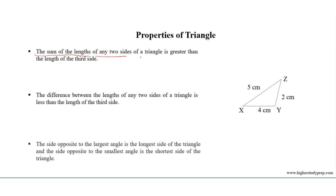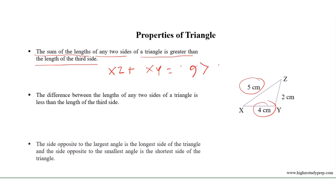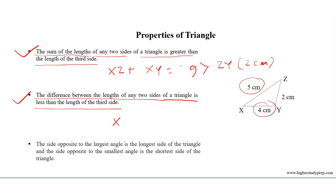Properties of a triangle: the sum of the lengths of any two sides of a triangle is greater than the length of the third side. For example, in triangle XYZ, XZ plus XY equals 5 plus 4 equals 9, which is greater than ZY equals 2 centimeters. The difference between the lengths of any two sides is less than the length of the third side; for example, XZ minus XY equals 5 minus 4 equals 1 centimeter, which is less than ZY equals 2 centimeters.